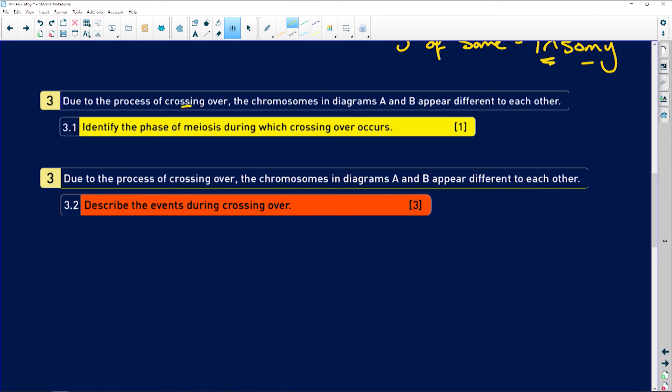Due to the process of crossing over, the chromosomes in diagram A and B appear different to each other. Identify the phase of meiosis during which crossing over. You should know this by now. Prophase 1. It happens in prophase 1. Why? Because there's no crossing over in prophase 2. None. So it has to happen in prophase 1.